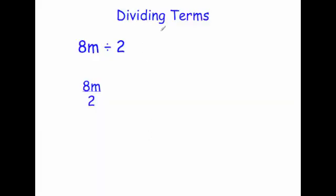In this video we're going to look at dividing terms. If you had 8m divided by 2, well half of 8m would be 4m. This means exactly the same thing: 8m over 2 or 8m divided by 2 is 4m. In algebra, remember that the divided by sign is sometimes written as an over — normally it's written as a fraction like that.